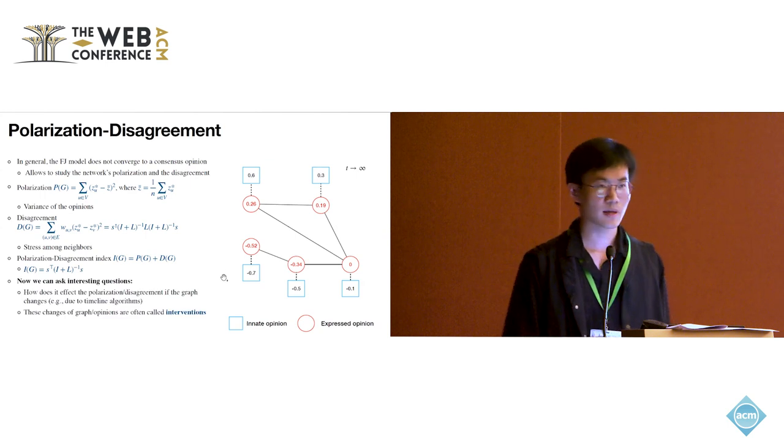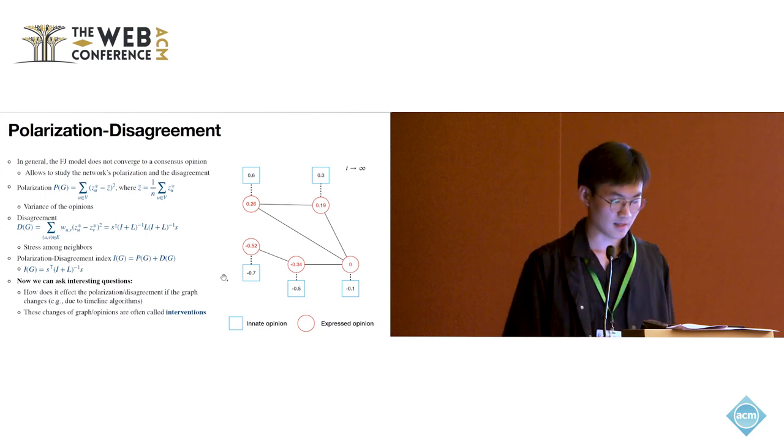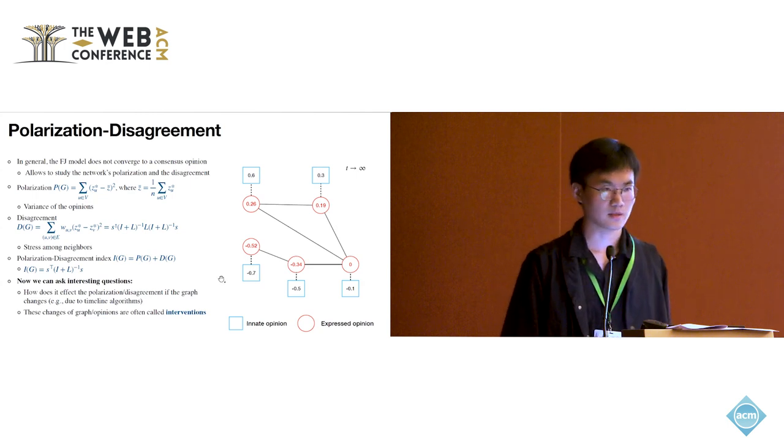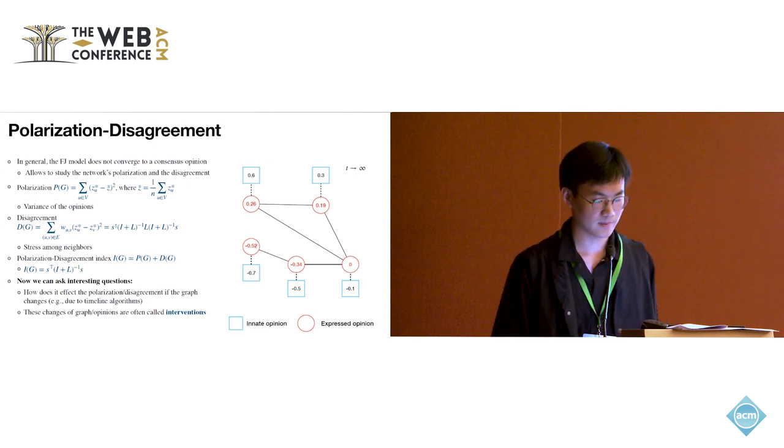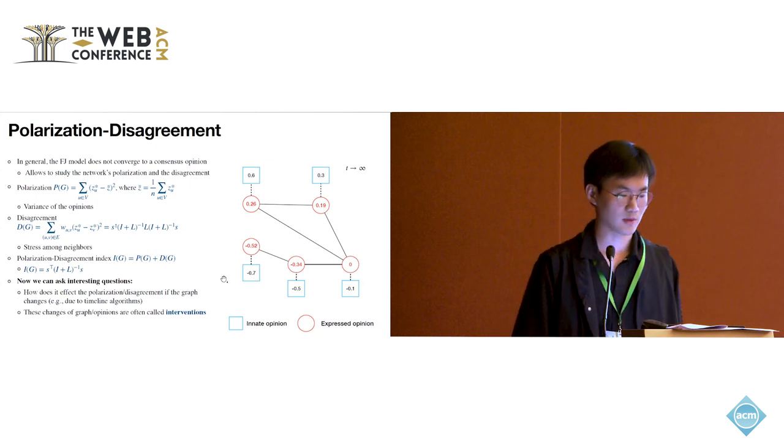Now we could ask some interesting questions. If we are allowed to do some interventions on the network, how does it affect the polarization if the graph is changed, for example, due to the timeline algorithm?